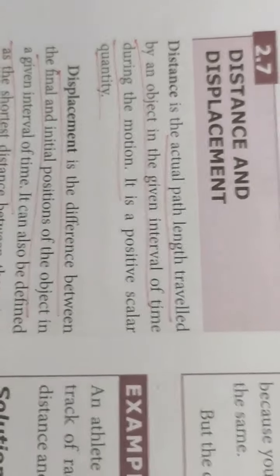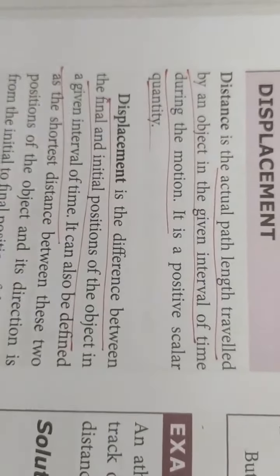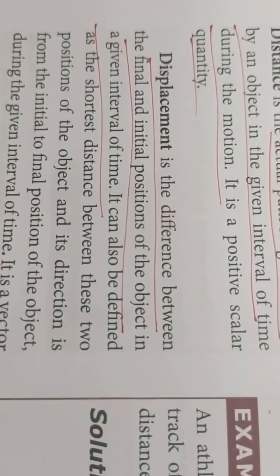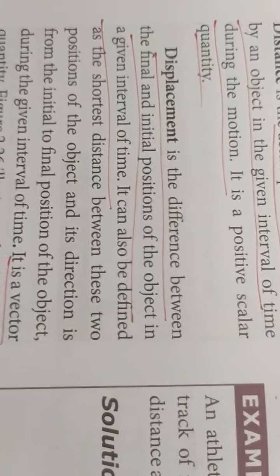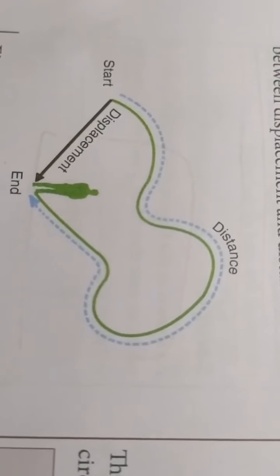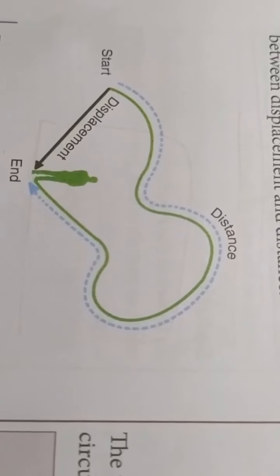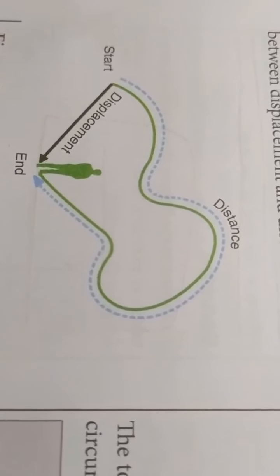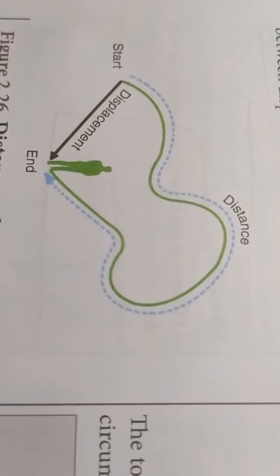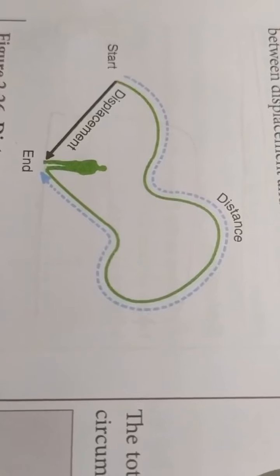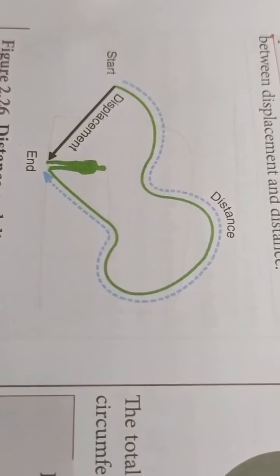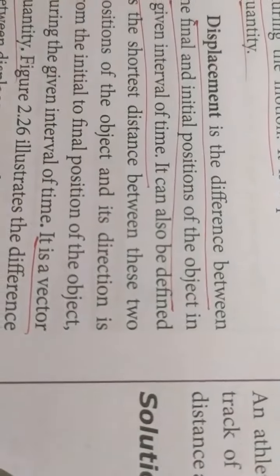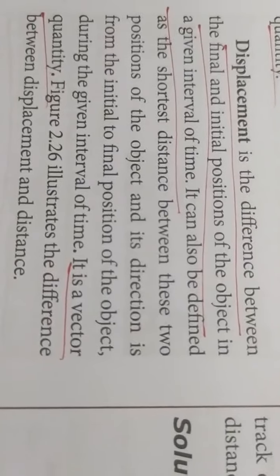Next, distance and displacement. Distance is the actual path length travelled by an object in the given interval of time. Displacement is the difference between the final and initial positions of the object in the given interval of time. The most important distinction is that distance is a scalar quantity, whereas displacement is a vector quantity.